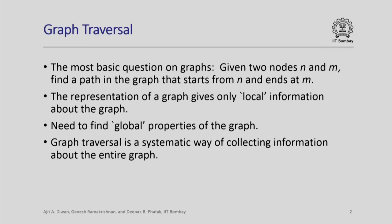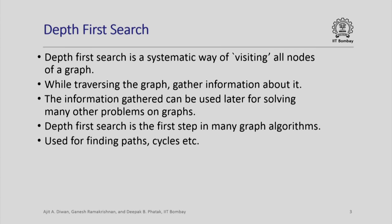A graph traversal is a systematic way of collecting information about the entire graph. We gather information by traversing the whole graph in a systematic way, and this information can then be used to solve many other problems on graphs. We look at one such method called depth-first search, which is a systematic way of visiting all nodes of a graph. Depth-first search turns out to be the first step for many problems on graphs, and it is especially useful for finding paths and cycles in a graph.